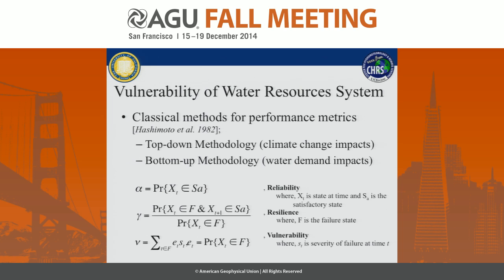About performance indices, we know that there are classical methods which have been developing for a long time. One of the very first was done in 1982 by Hashimoto et al. He defined reliability as the probability of a satisfactory state in the whole states, and then resilience as the probability of two consecutive events, where the first is a failure but the second one is a satisfactory one. Vulnerability itself is not only the probability of the satisfactory state, but also the severity of failure at time t.